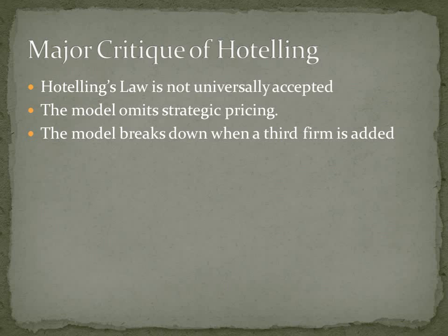Further, the two firms choose to locate at the midpoint of the line. A firm that unilaterally moves away from the midpoint loses market share and profit. Another critique of Hotelling's law is that Hotelling modeled the way in which firms share the market. He used a simple model in which consumers are evenly dispersed along a line and buy from the nearest firm. The two firms choose to locate at the midpoint of the line. However, when a third firm is added to the model, there is no equilibrium.